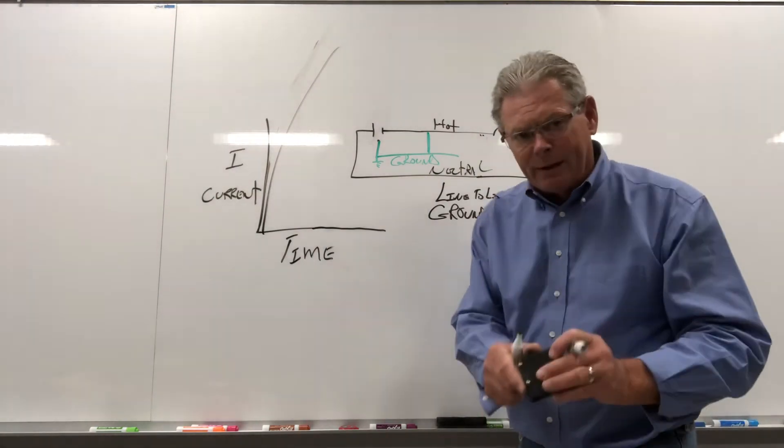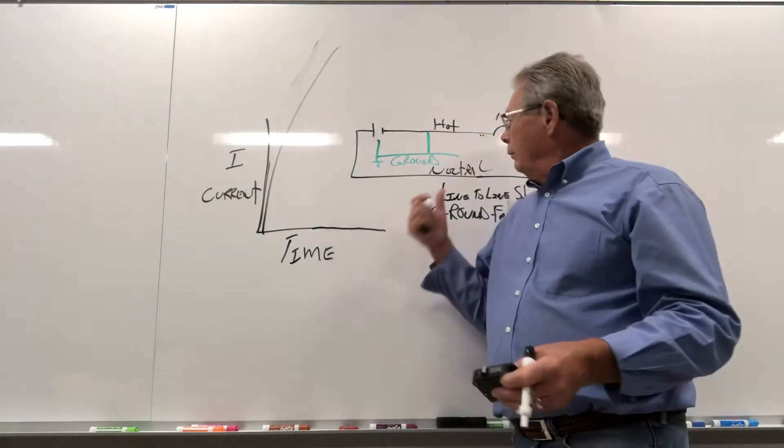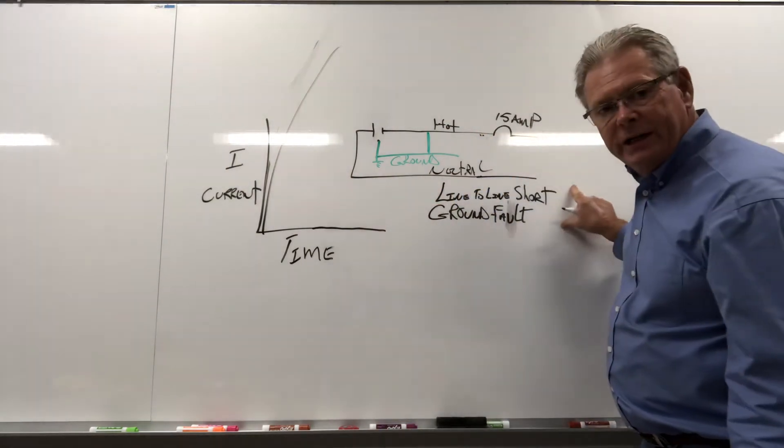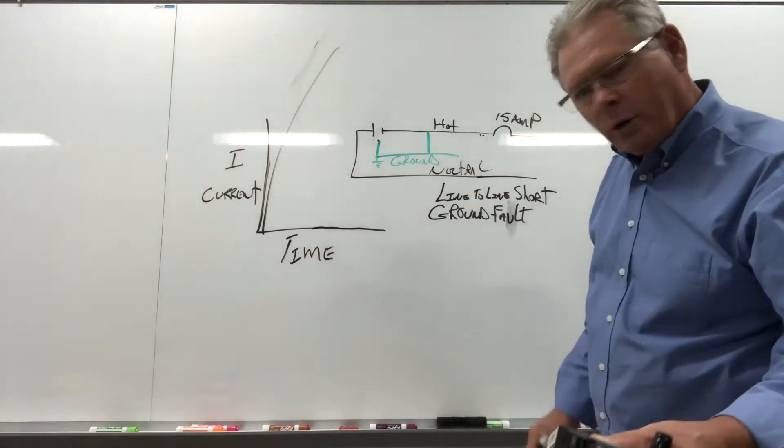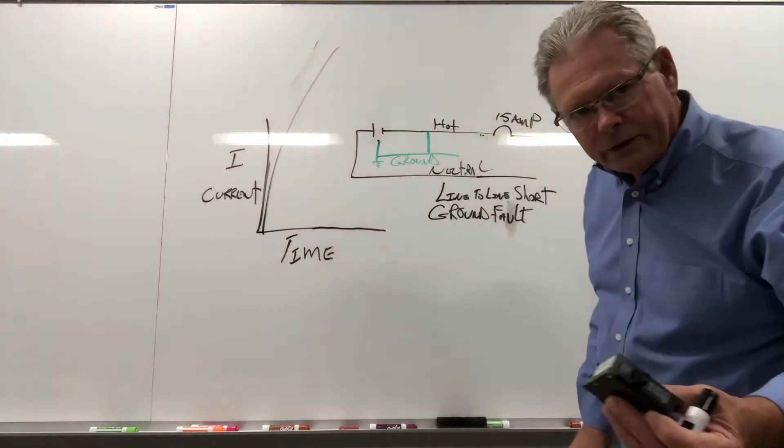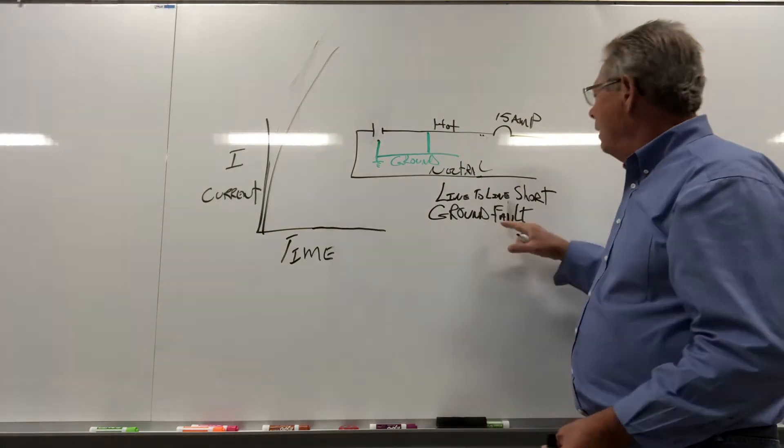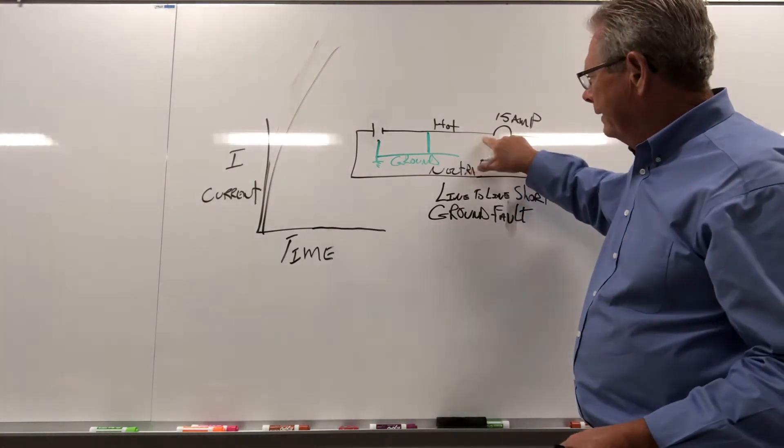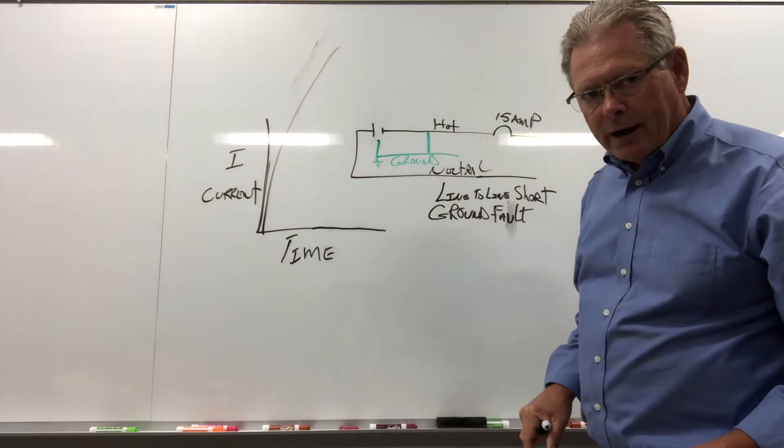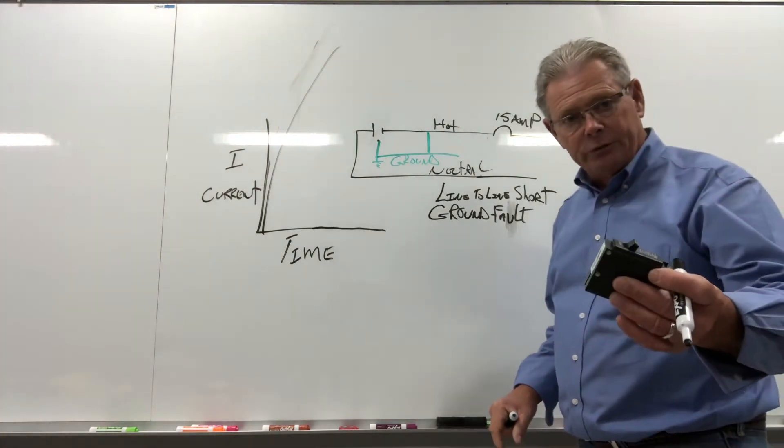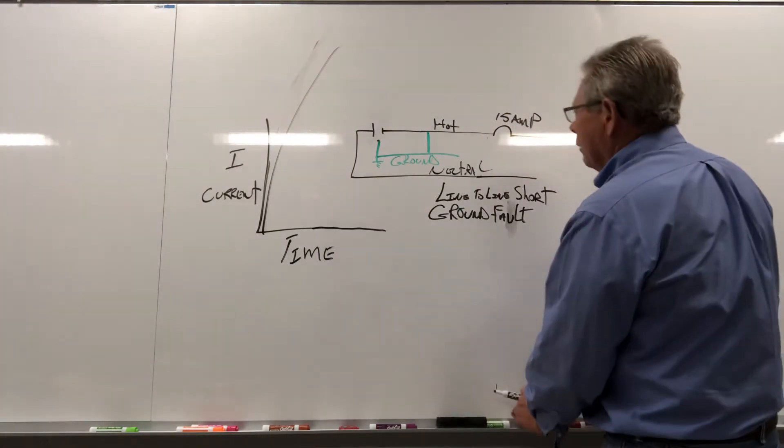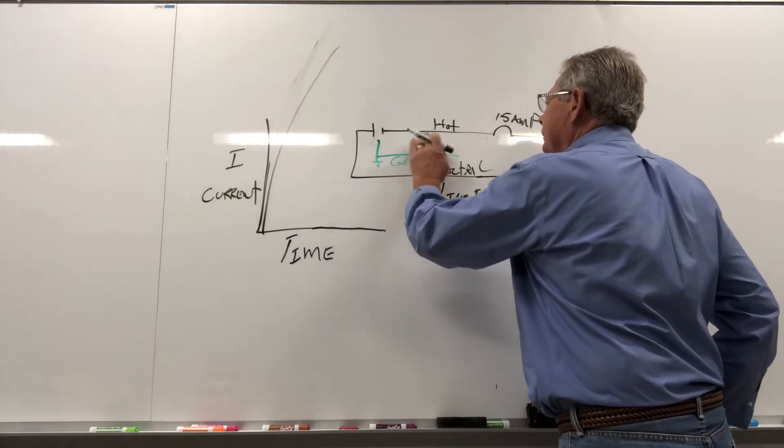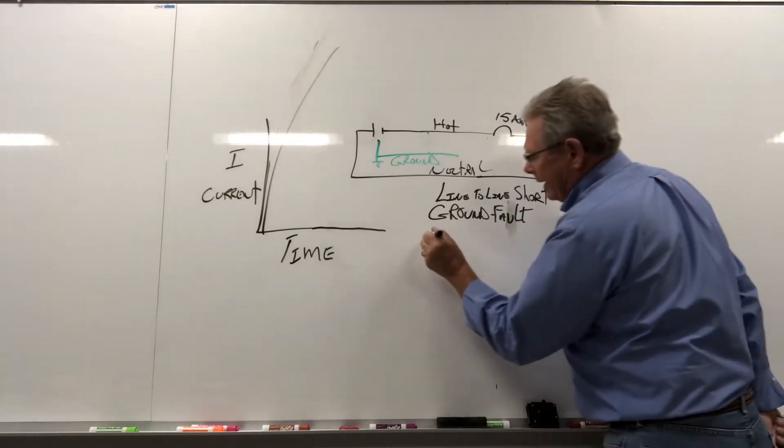So if you reset a breaker and it goes pow, probably looking for one of these two conditions, a line-to-line short for 120 volts to be line-to-neutral, your current-carrying conductors. Or it can be a ground fault where your hot has come into contact with your ground. Does that help troubleshooting? It should. Okay, let's remove that short, and let's talk about an overload.